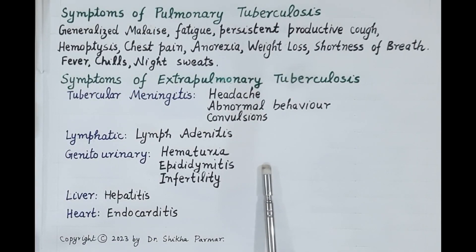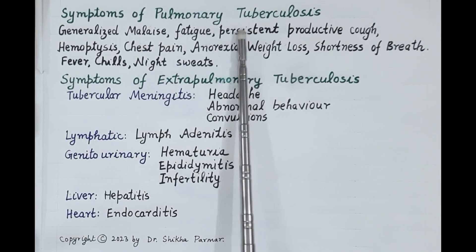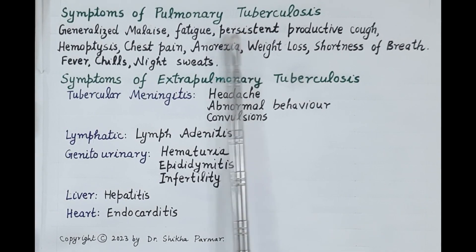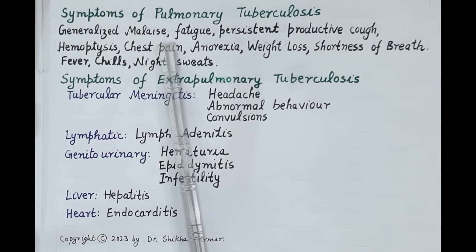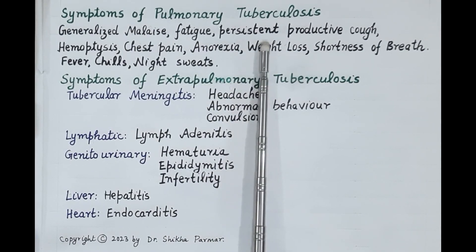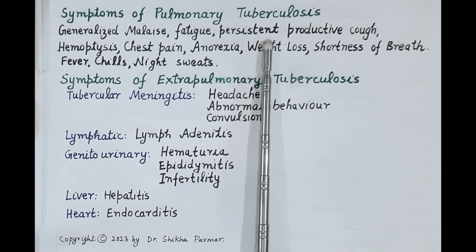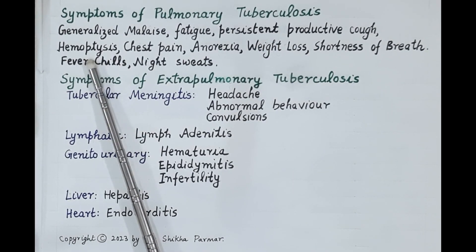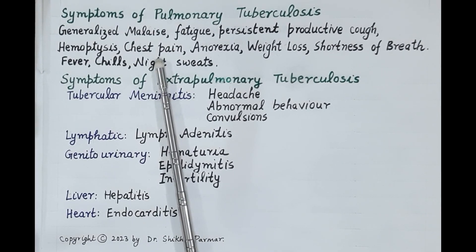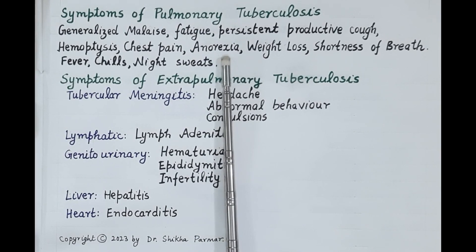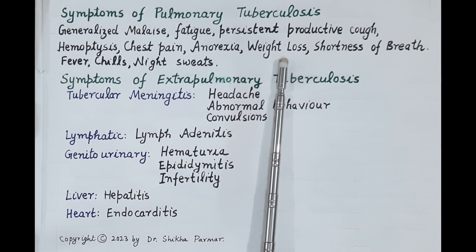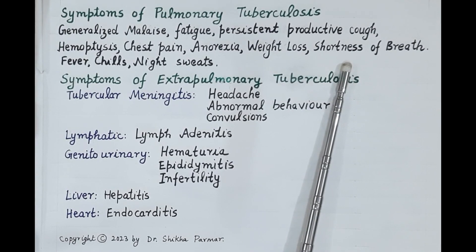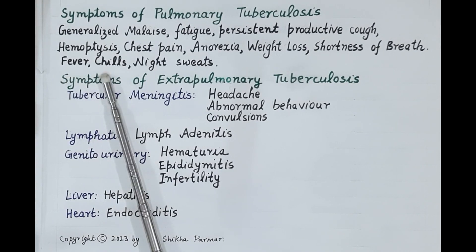Clinical symptoms of pulmonary tuberculosis develop very slowly and include generalized malaise — a feeling of sickness — and fatigue. There is persistent productive cough with mucus that lasts for around three weeks or longer, and many times blood also comes in the cough — this symptom is termed as hemoptysis. Pulmonary tuberculosis can also cause chest pain, anorexia — loss of appetite — weight loss, shortness of breath, fever, chills and night sweats.